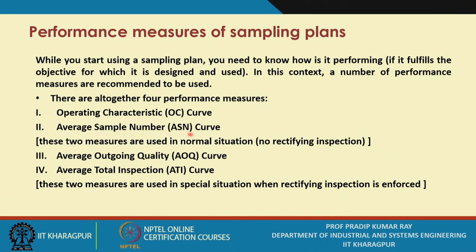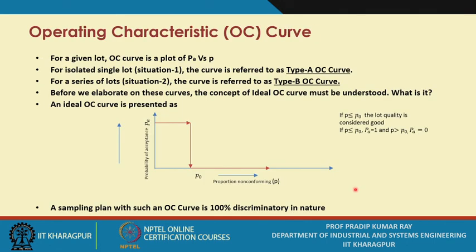The second one is the average sample number curve. These two curves are used in the normal situation — meaning there is no rectifying inspection. We have already explained what rectifying inspection is and why you may use it. Two more performance measures are also referred to: the third one is the average outgoing quality curve and the fourth is the average total inspection curve. These two measures are used in the special situation when rectifying inspection is enforced.